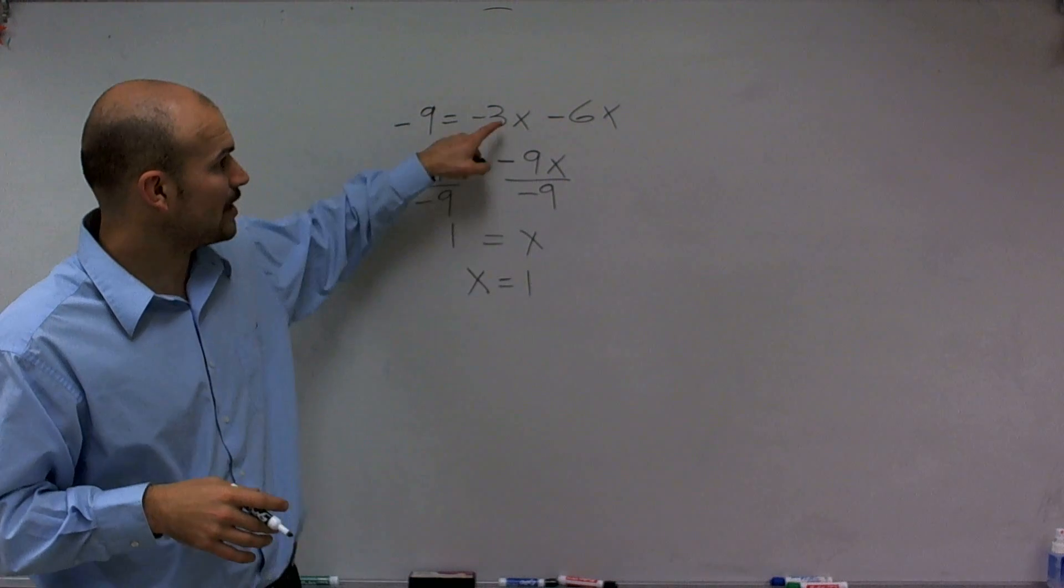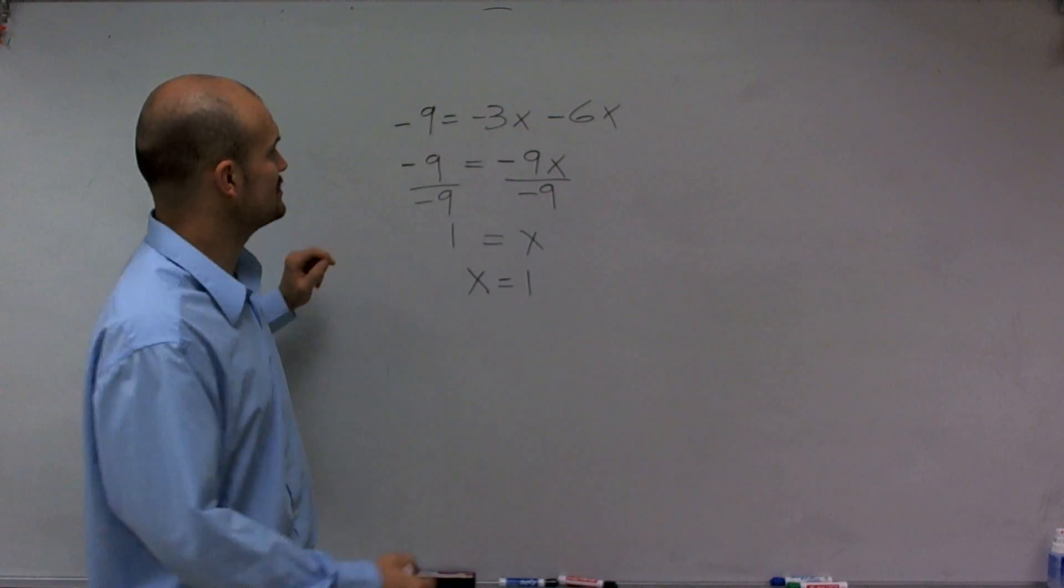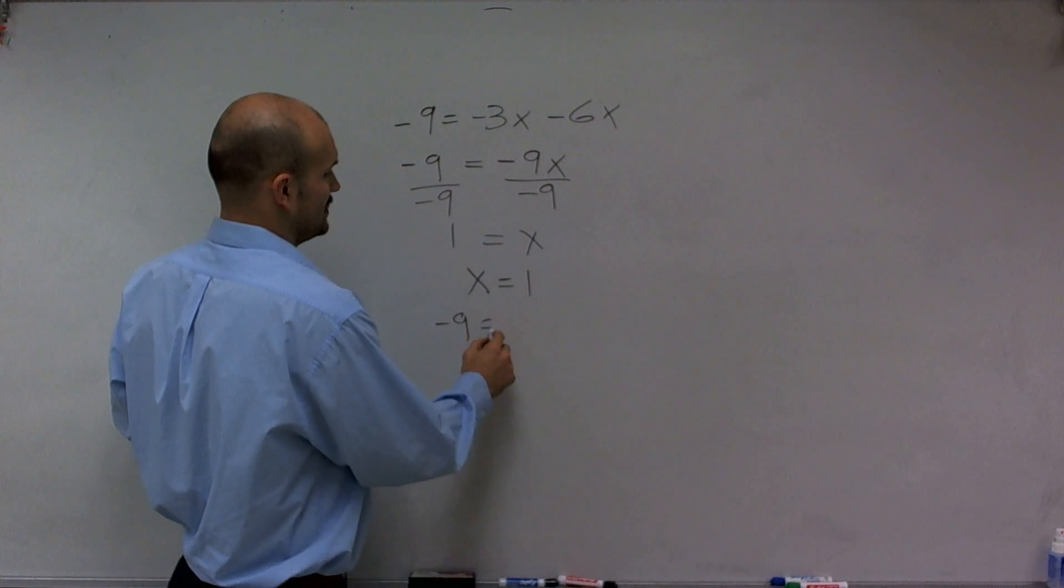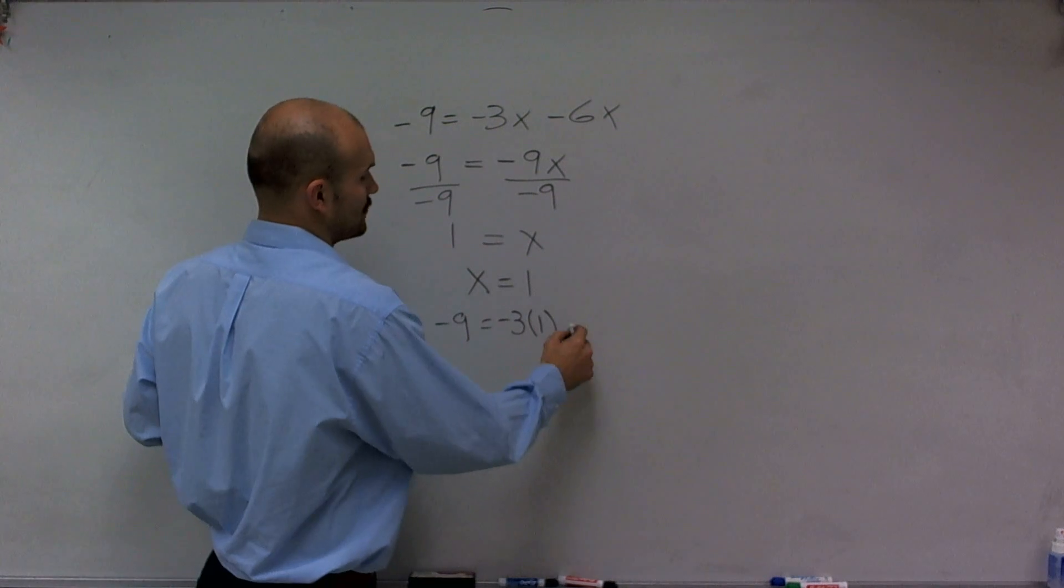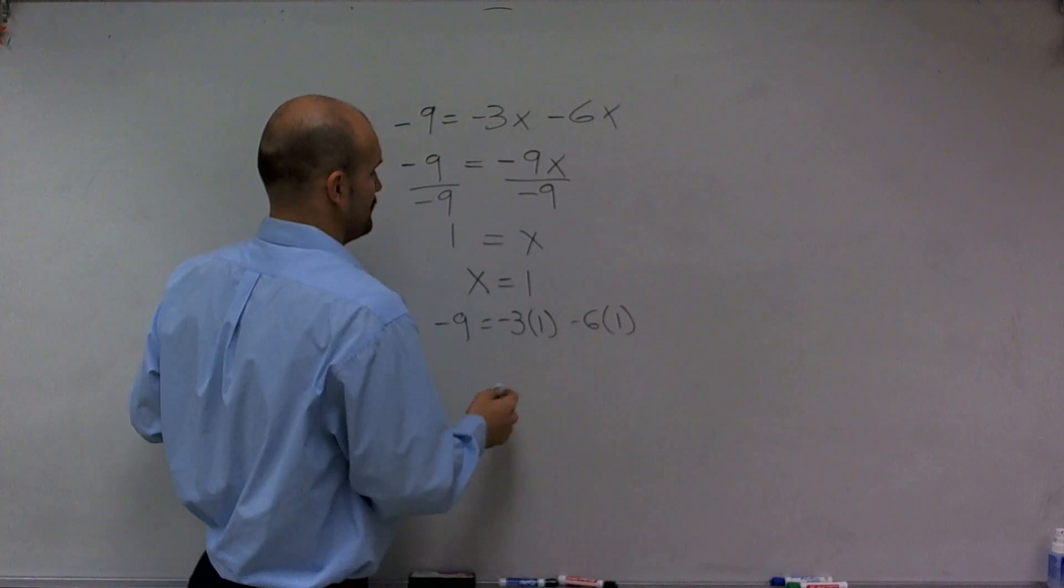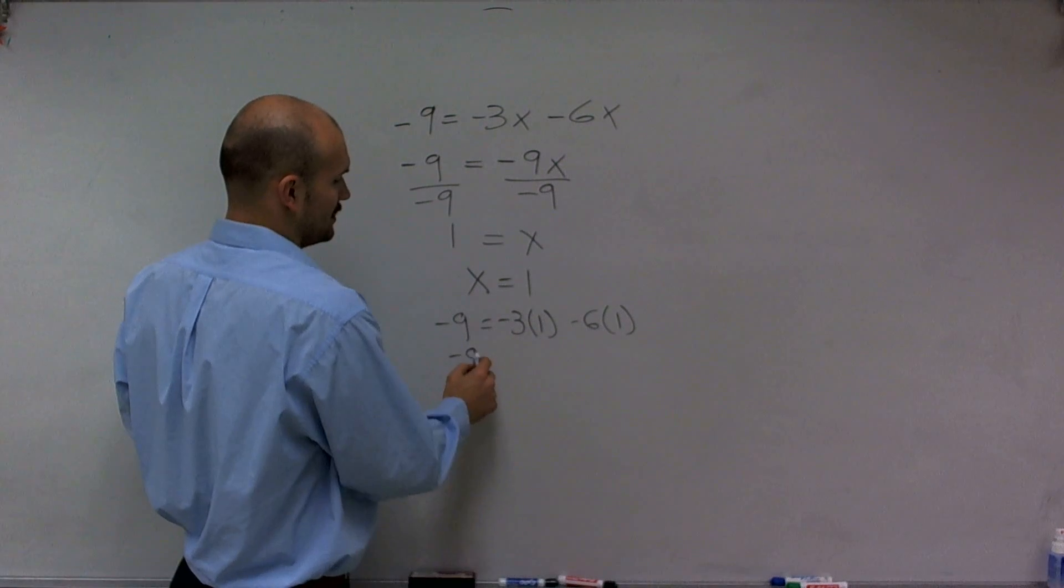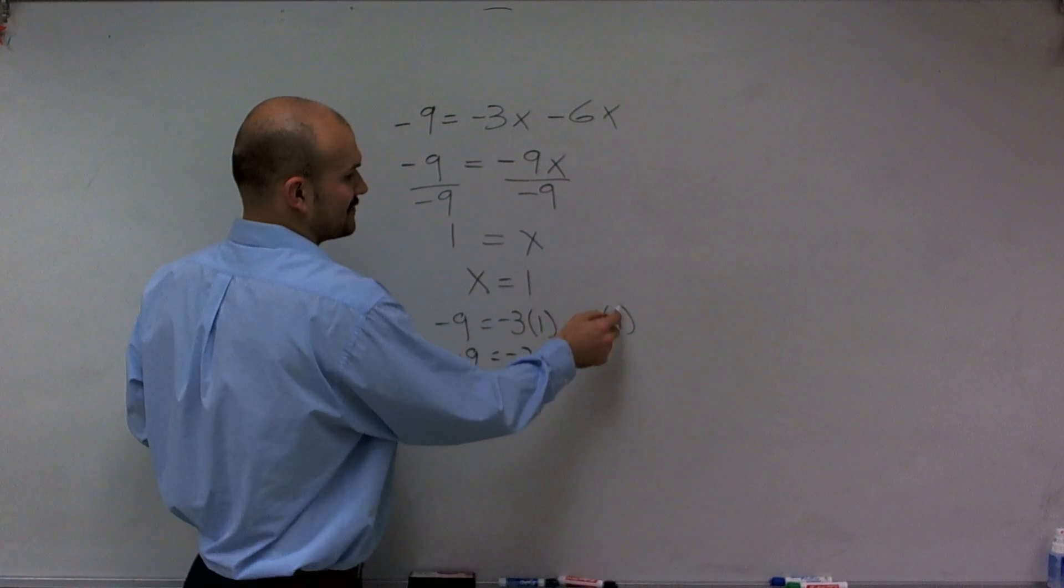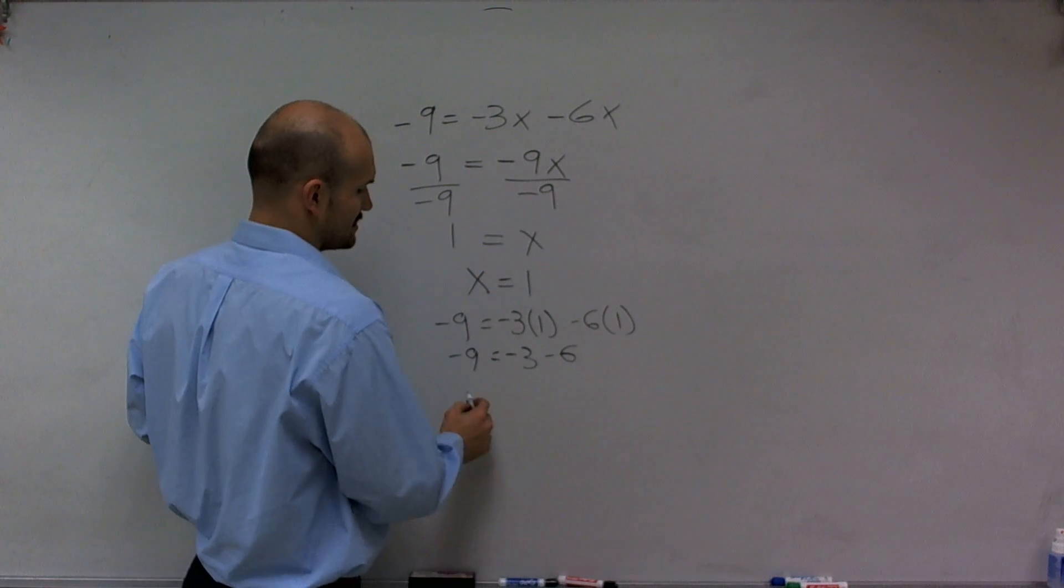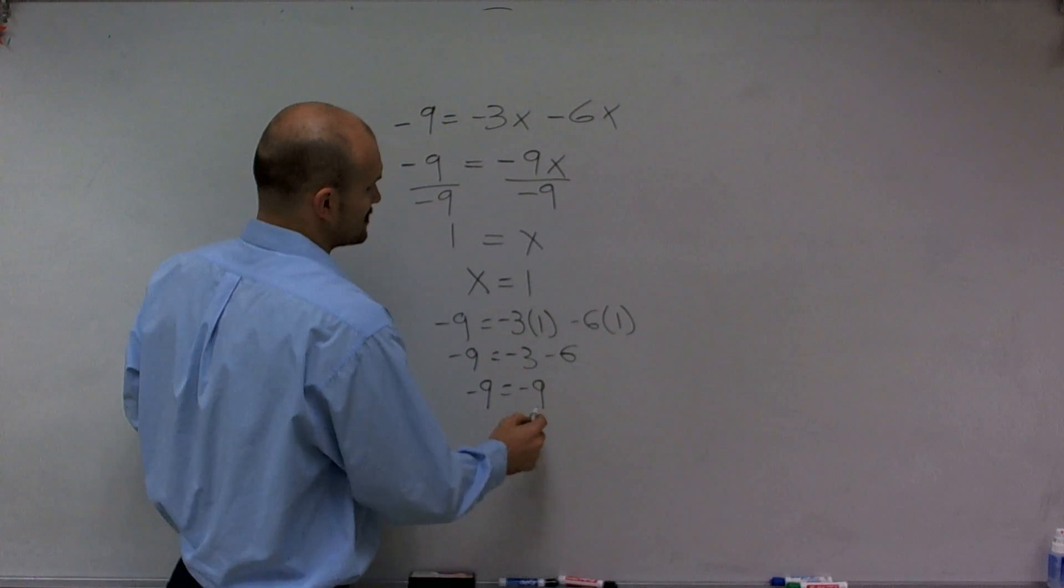We can always plug back our problem into the original equation to see if it's going to work. So -9 = -3 times 1 minus 6 times 1. Well, -3 times 1 is going to equal -3. -6 times 1 is -6. Therefore, -9 = -9.